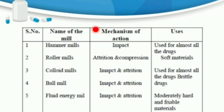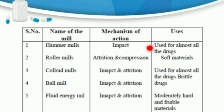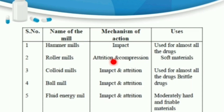In this table, various types of mills and their mechanism of action are mentioned. First is the hammer mill, which operates on the principle of impact and is used for ointments, slurries, dry materials, and almost all drugs. Next is the roller mill, which operates on the principle of attrition and compression and is used for soft materials.